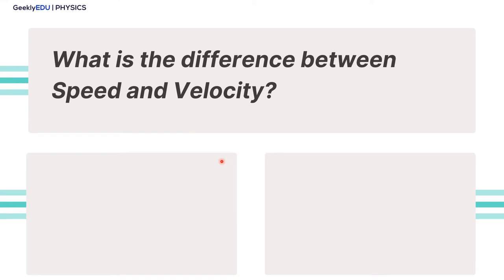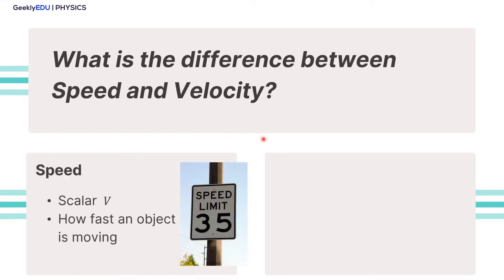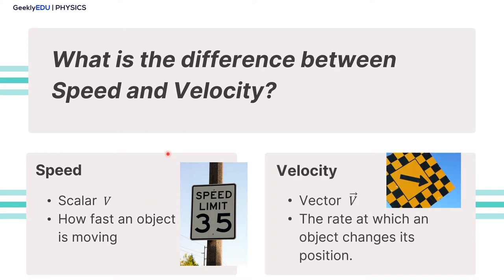So what's the difference between speed and velocity? Speed is a scalar number, which means it has no direction associated with it. You can think of speed as how fast an object is moving. On the other hand, velocity is a vector, which means you have a direction associated with it, and it's the rate at which an object changes its position.